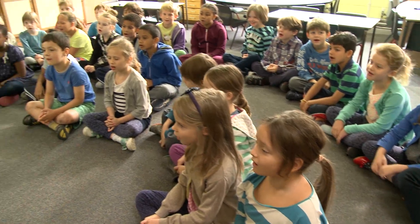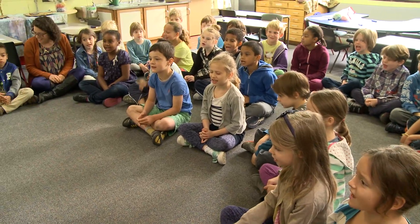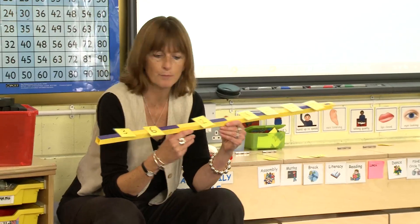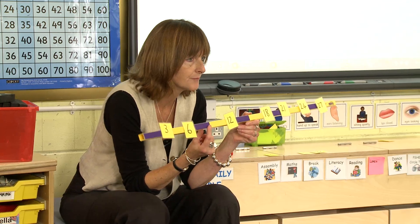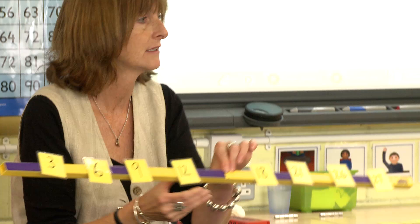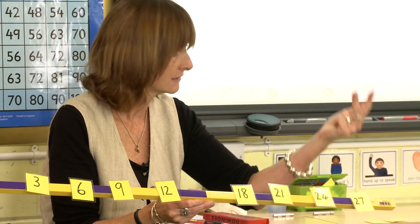We start every lesson in the Juniors by chanting a times table. Four threes are twelve — good girl, Brooke. Five threes are fifteen. And even up in Year Six we'll have a visual, the counting stick. What's the missing number there? Nine. Good girl. Always start with that, it's a real routine — always start the lesson for two minutes.